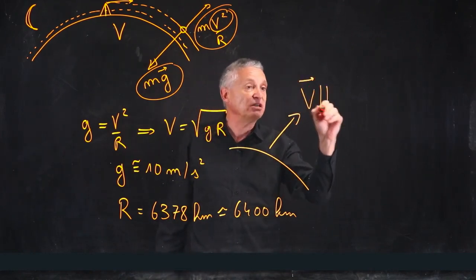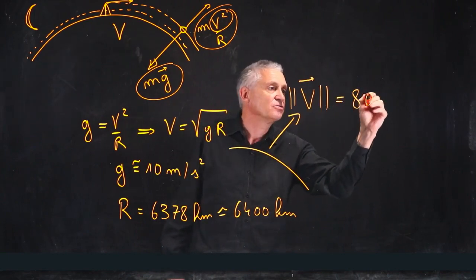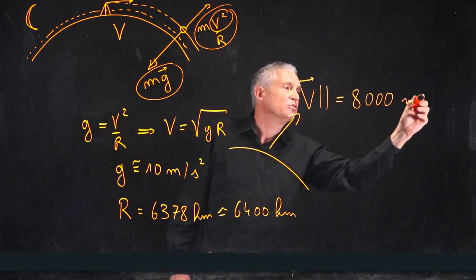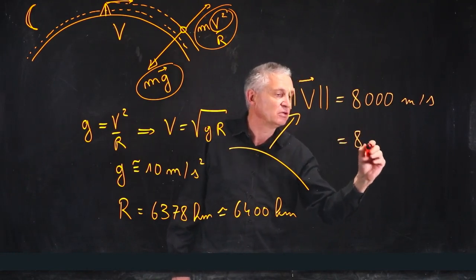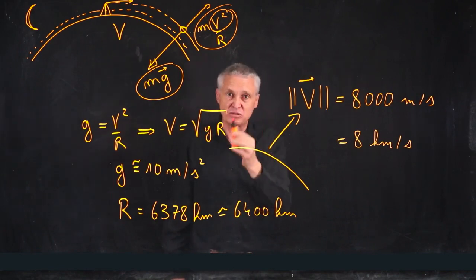It gives that the magnitude of V, the amplitude of V is simply 8,000 meters per second, which is 8 kilometers per second. That's the tax to pay to go to space.